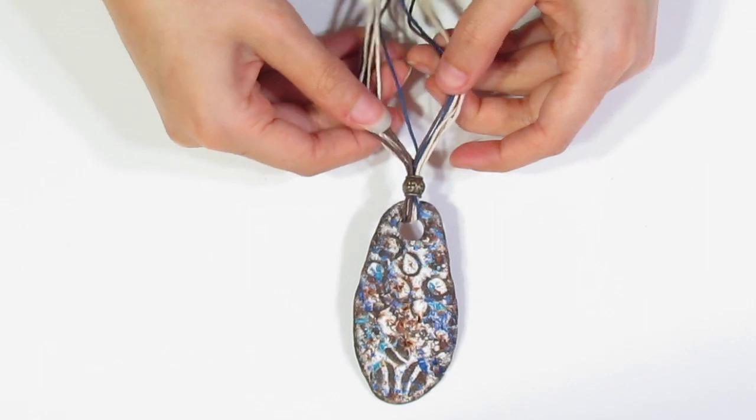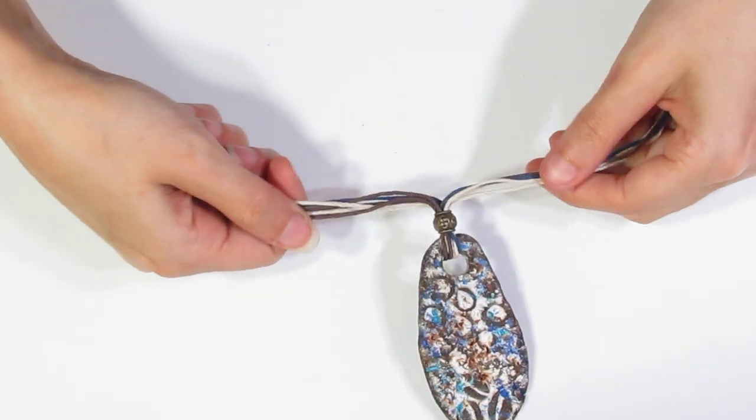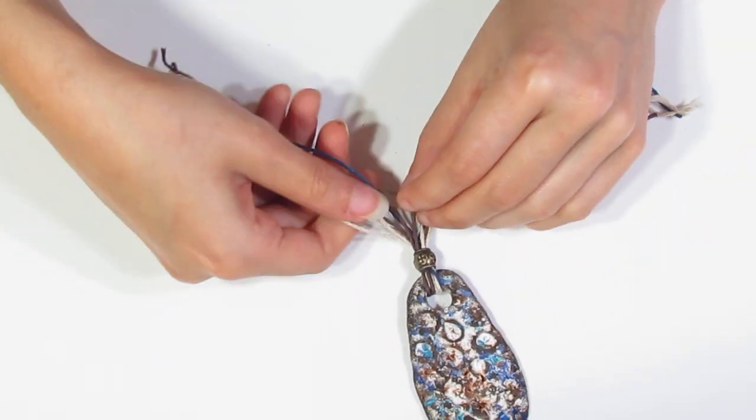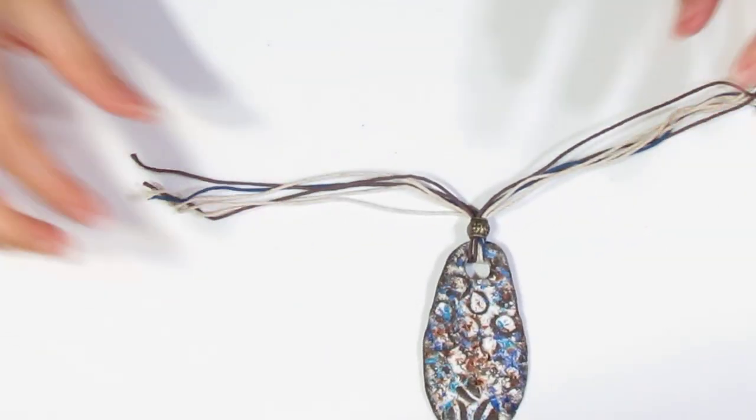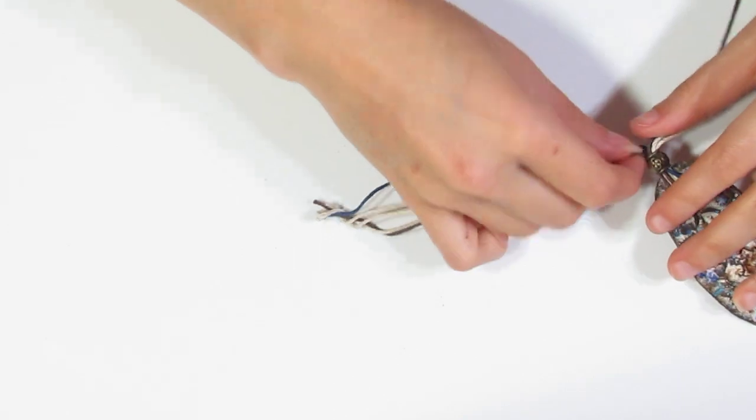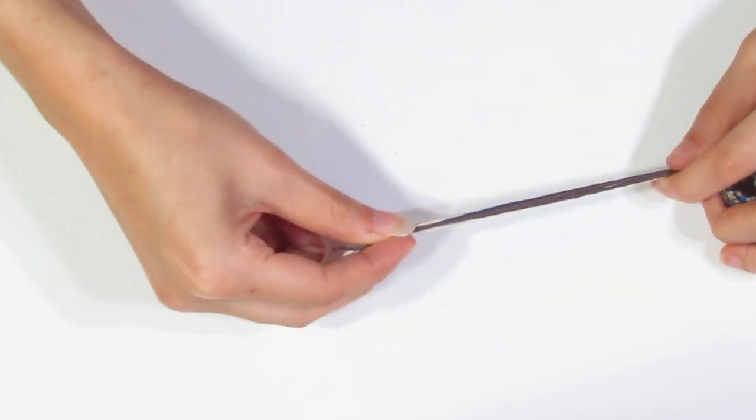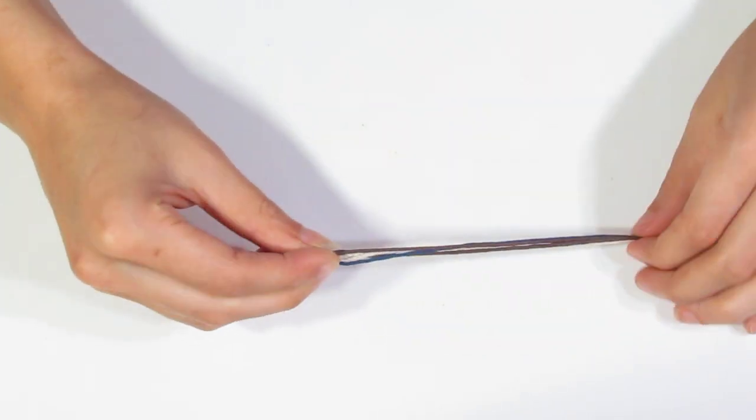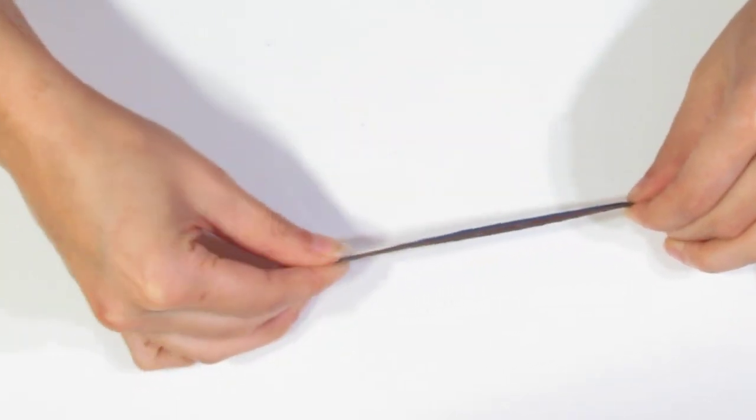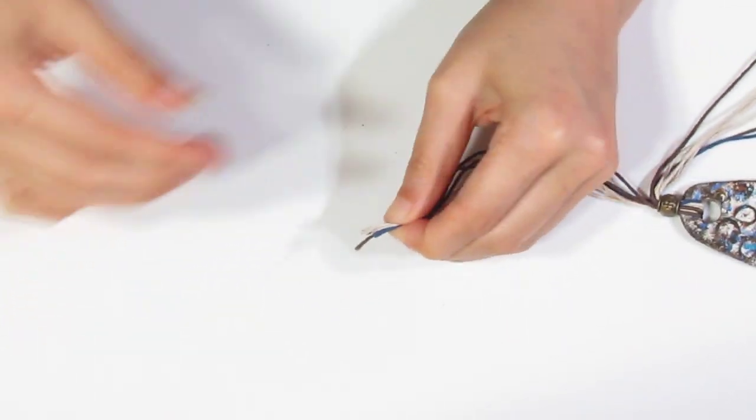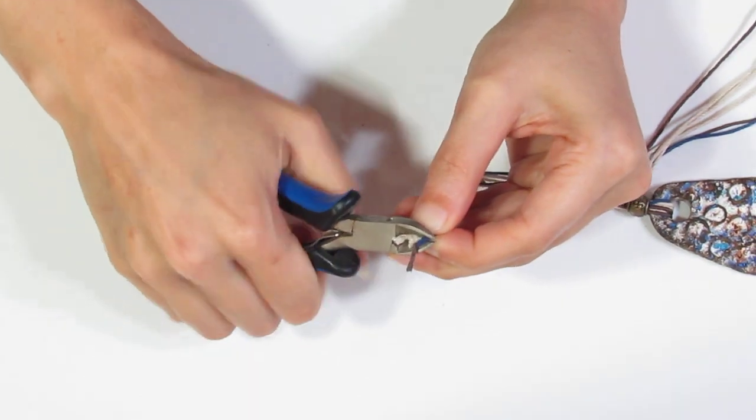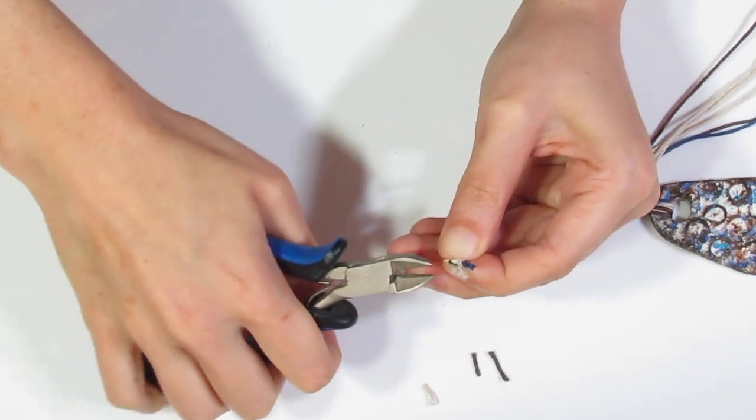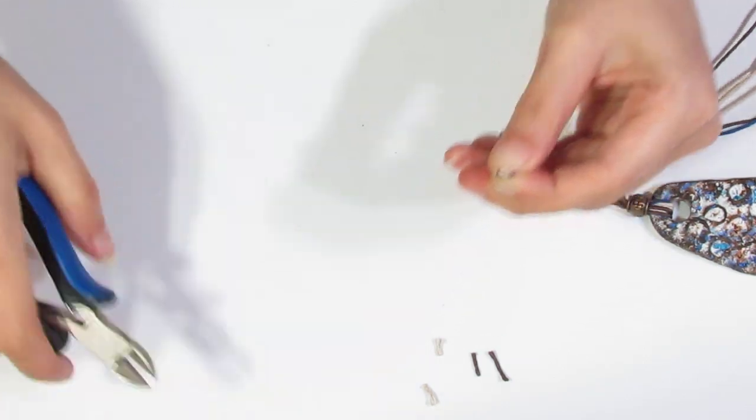Then I'm going to take those and I'm going to make sure that I have an equal number of colours on each side. Then just take those and I'm just straightening them out. And I'll trim them so that they're all the same length.